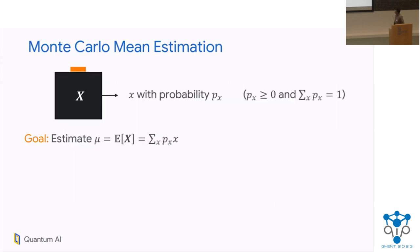Let's get right into it. So what is the task of Monte Carlo mean estimation? Imagine you have access to a discrete real-valued random variable, capital X, and the way you have access to this random variable is through a black box. Every time you press the little orange button on the top, you get out a real number X with some probability P sub X, and these probabilities are non-negative and sum to one. Your goal is to estimate the mean of this random variable — the mean is just the sum over X of P_X times X. So what would you do if you had to solve this task, given around n samples? The most obvious thing is to take n samples, see n real numbers X, and just compute their average — the empirical mean.